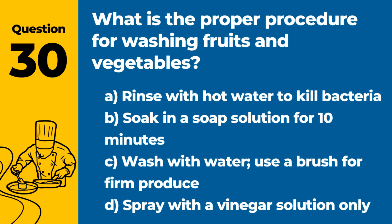Question 30. What is the proper procedure for washing fruits and vegetables? Answer: C. Wash with water; use a brush for firm produce. This method effectively removes dirt and reduces microbial contamination.